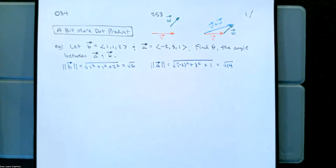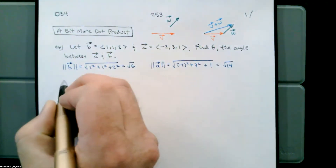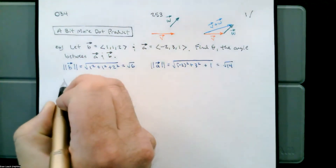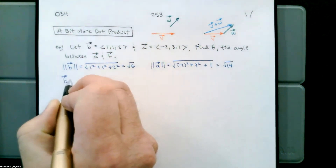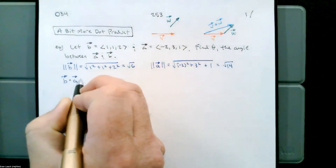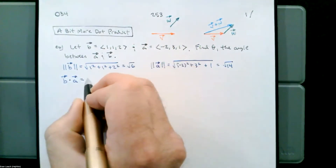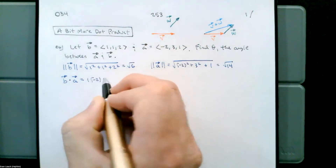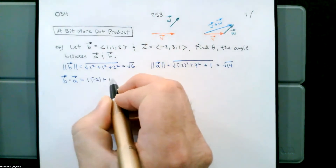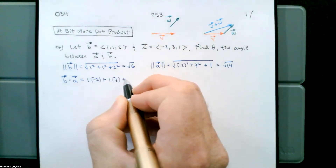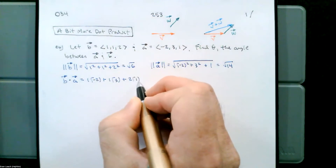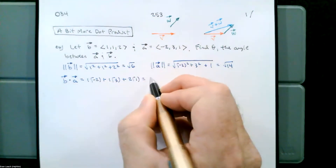We also want to get the dot product of the vectors, which we'll find by computing the sum of the products of corresponding components. So B dot A is one times negative two, plus one times three, plus two times one — so it looks like three.